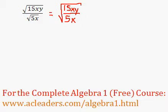Okay, now I can cancel things out. 15 divided by 5 is just 3, so I can put a 3 up top here. It's still inside the root, and the x's can also cancel out.